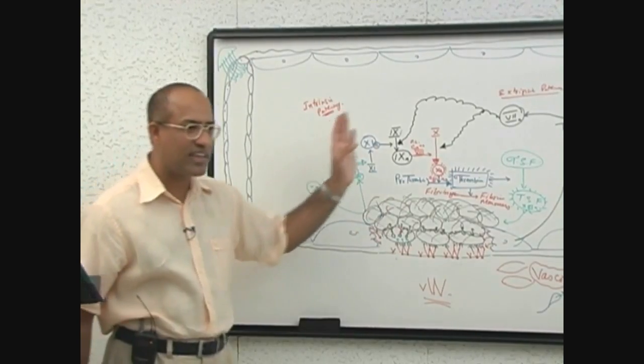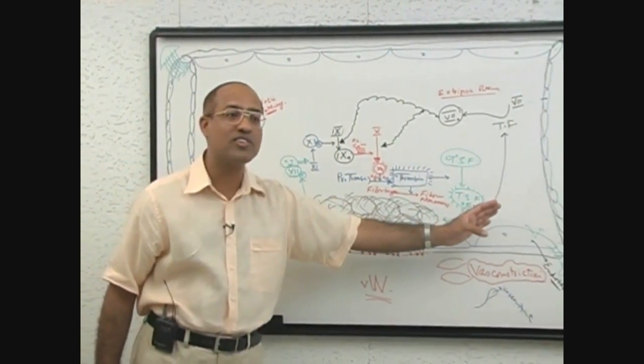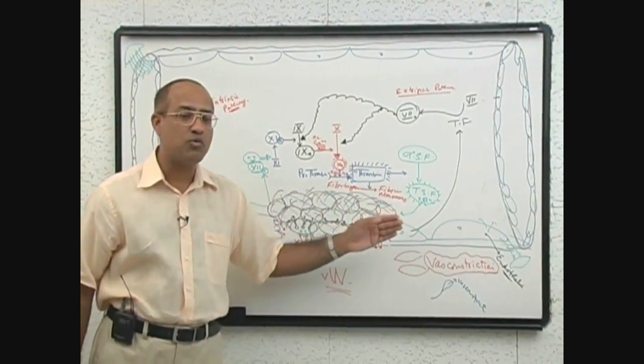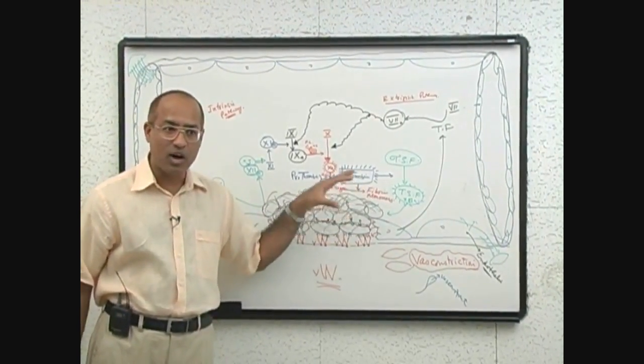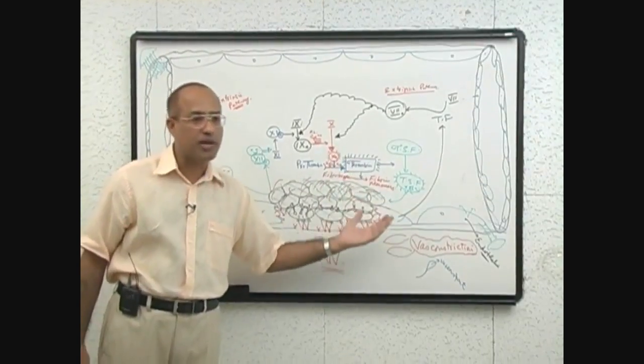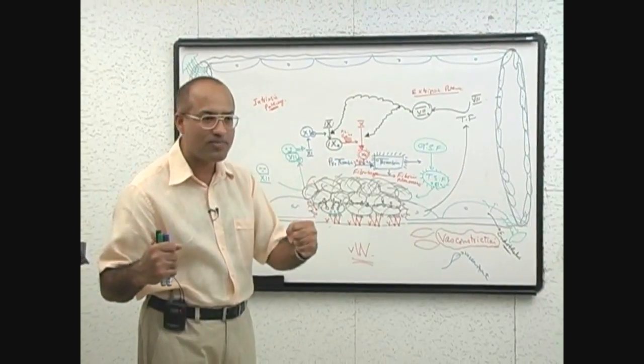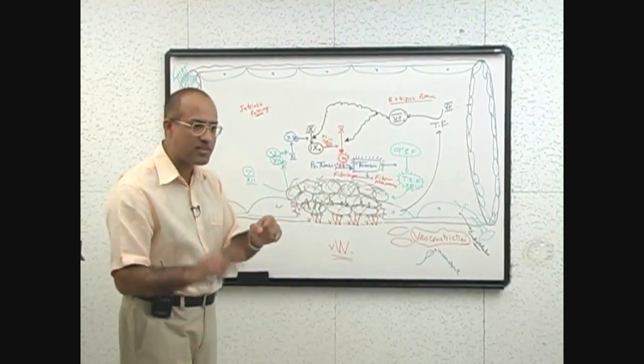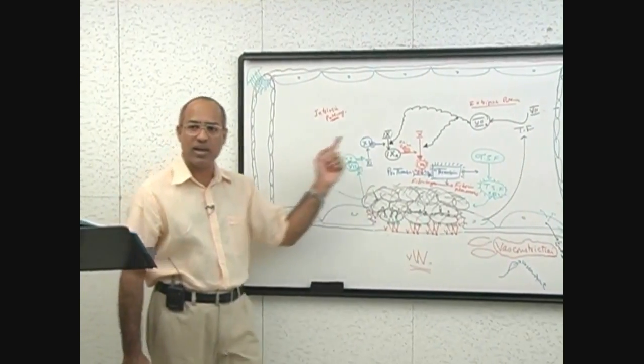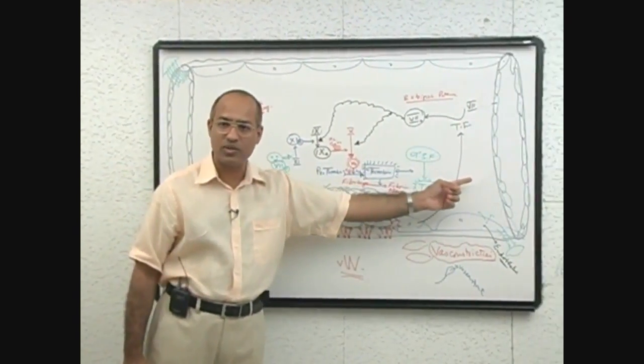Then what happens? Intrinsic and extrinsic pathways of coagulation are activated so that fibrin should be deposited on this plug and this primary plug could be converted into a more yielding strong secondary plug.